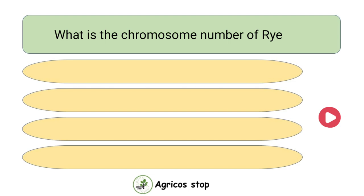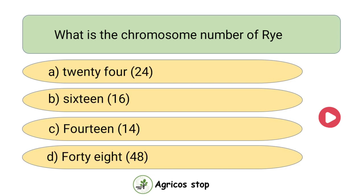What is the chromosome number of Rye? Options are 24, 16, 14, and 48. The answer is 14. The chromosome number of Rye is 14.